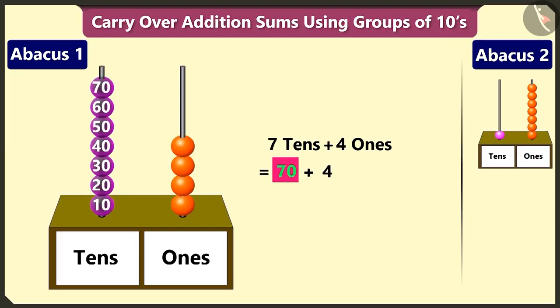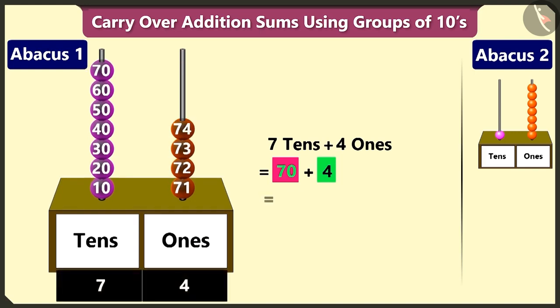Now to add 4 to 70, count after 70: 71, 72, 73, and 74. Well done.